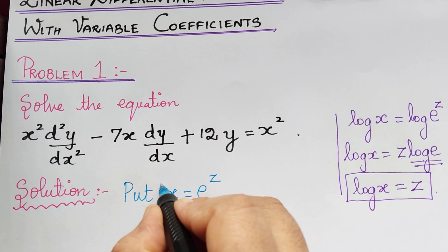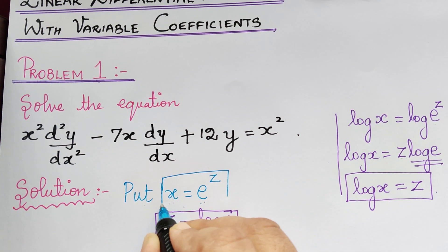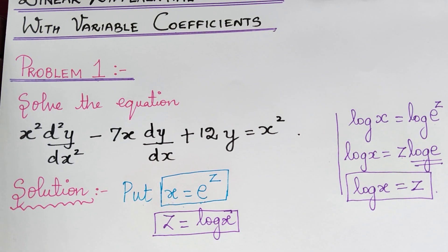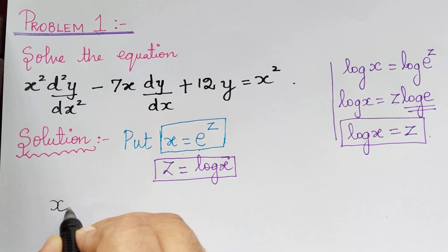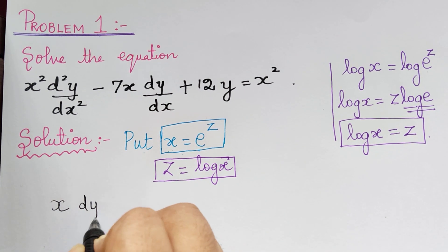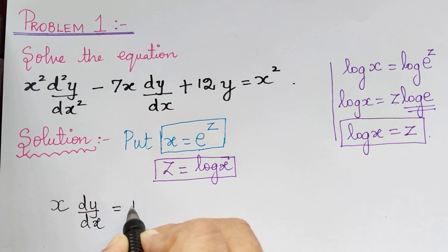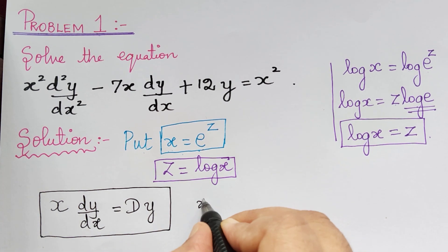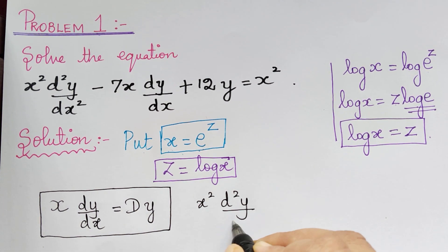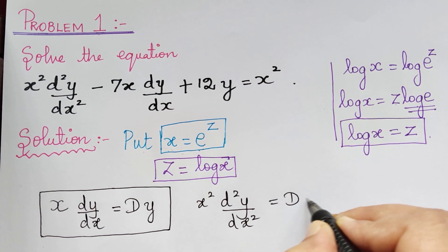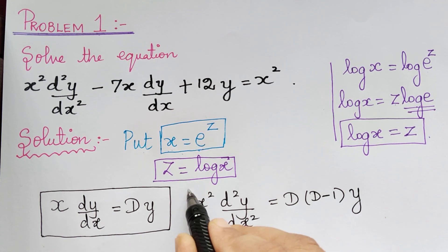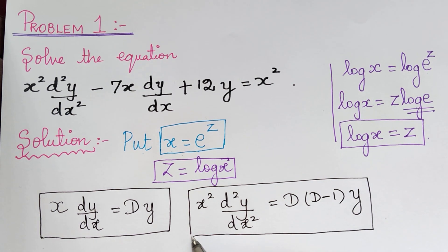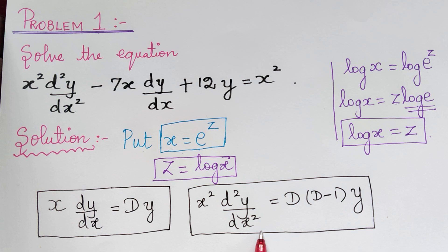Making use of these two substitutions, we are going to solve the given linear differential equation. We also need to remember that x·dy/dx equals D·y (capital D), and x²·d²y/dx² equals D(D−1)·y. How we obtained these two is in the theory part of linear differential equations with variable coefficients — you may refer to it and remember these two.